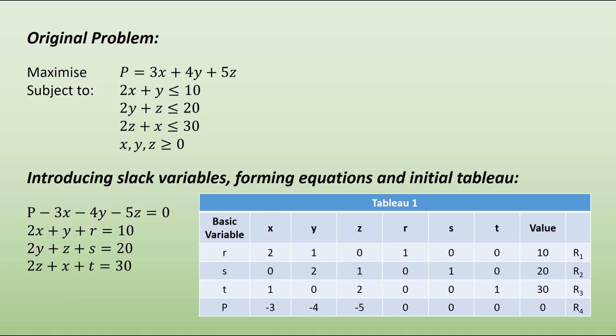Our first constraint states that we have two x's, one y, no z's, and one r. So there are zeros appearing in z, s, and t for that particular row. For the objective row, make sure that you get those coefficients correct. There are minus three x's, minus four y's, and so on. Of course, we have no r, s's, and t's in there, and that has a final value of zero.